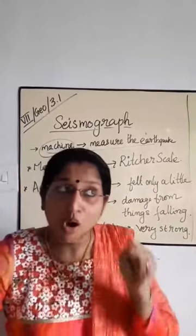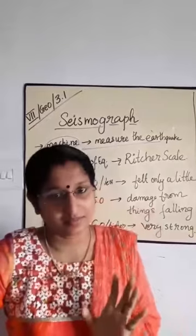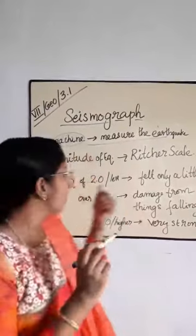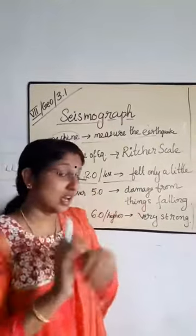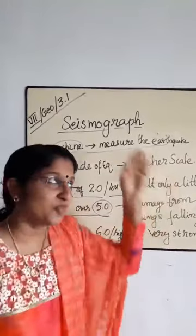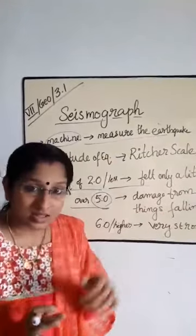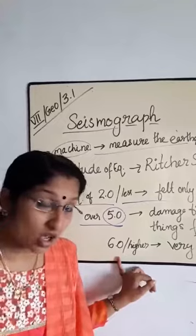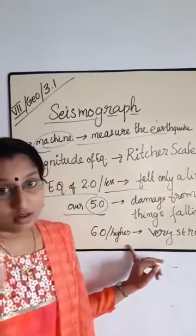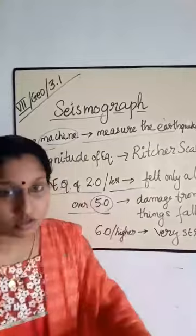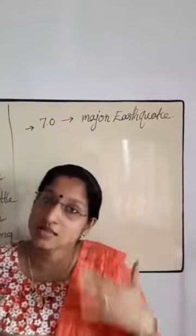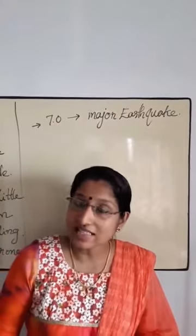An earthquake of 2.0 or less can be felt only a little. If it is over 5.0, it will cause damage to things. An earthquake of 7.0 or above is classified as a major earthquake.